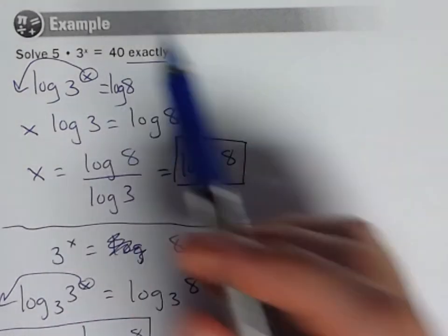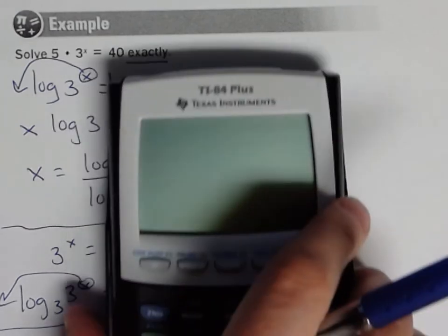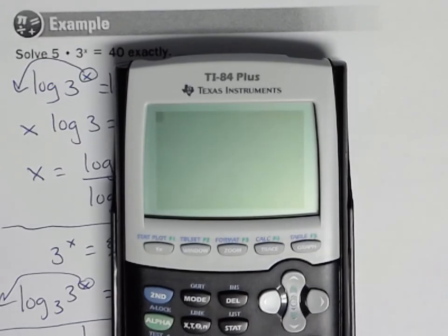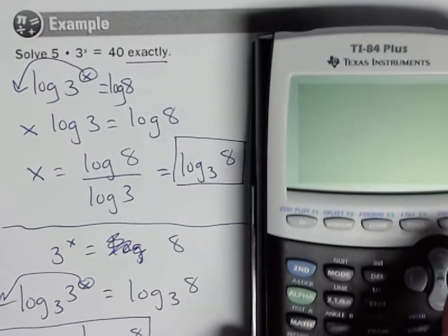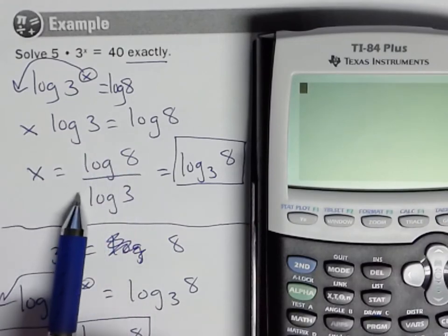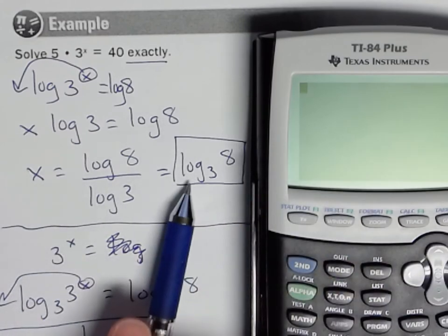Now, this problem asks for exact solutions, so I would go ahead and leave my answer like this: log base 3 of 8. That is the exact answer. It's kind of like saying the square root of 2. Though sometimes, a lot of times, we're actually going to approximate answers. So if that's the case, I would go ahead and put it in my calculator. You could do it either way. Again, that's why I like to show it this way, because anybody with this log button on their calculator could put this in. And again, on this, you could do log base 3 of 8 directly.